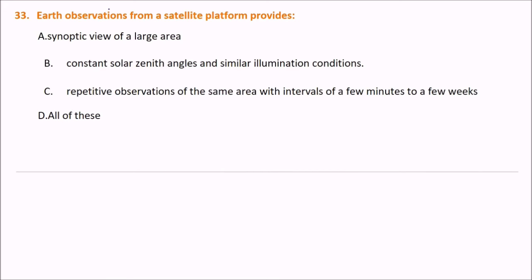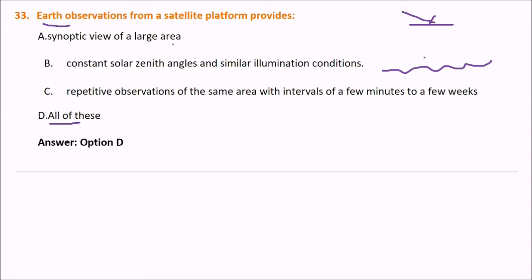Earth observations from a satellite platform provides: a synoptic view of a large area, constant solar zenith angles and similar illumination conditions, and repetitive observation of the same area with intervals of a few minutes to a few weeks. All of these are what we call earth observation.